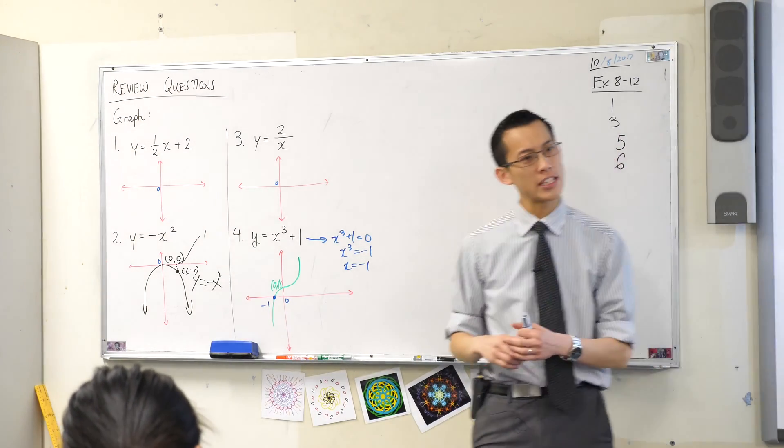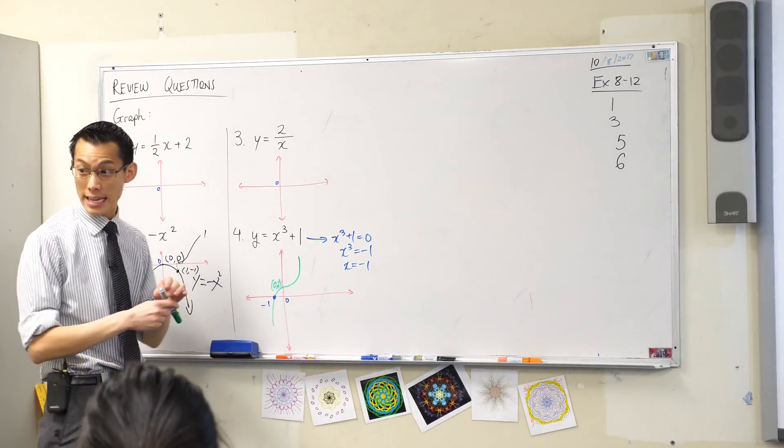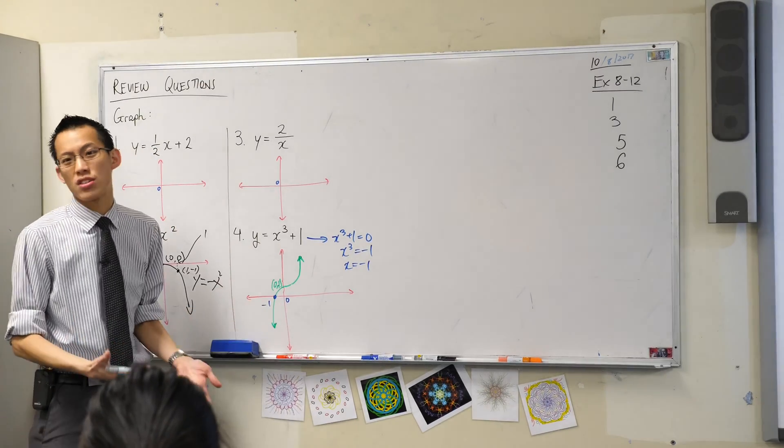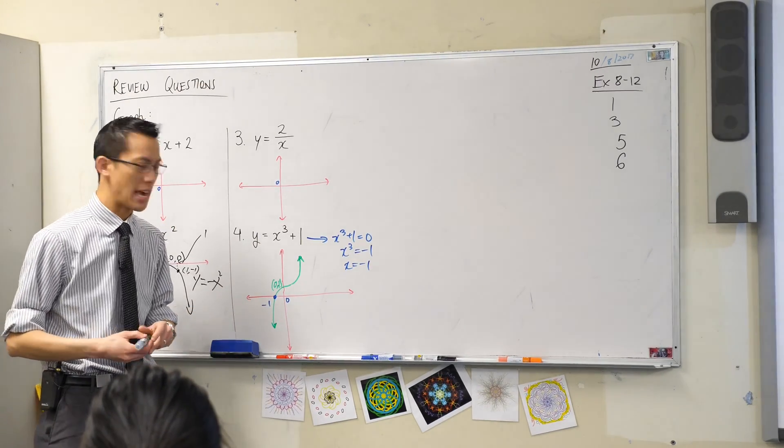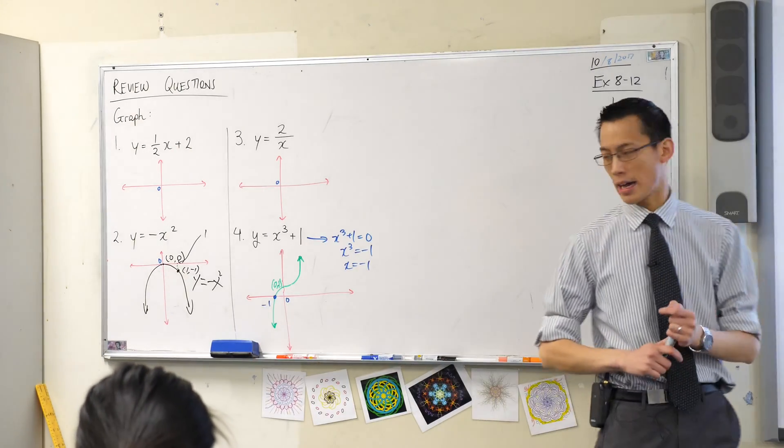This cubic curve, it's missing some things on the ends. What does it need on the ends? It needs arrows. Why does it need arrows? Yeah, it shows that it never stops. Some graphs actually stop. They have a beginning, they have an end. This graph keeps going forever.